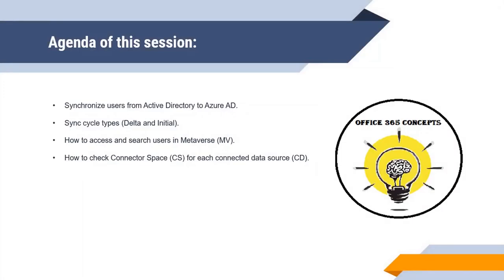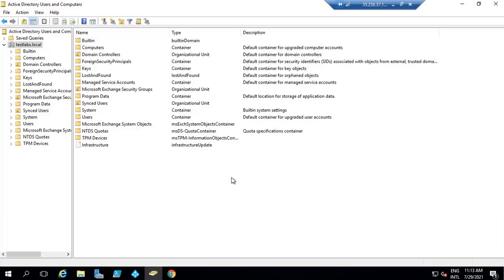In this particular video, I will be showing you how to synchronize objects from Active Directory to Office 365. I will show you practically how to create users and how to run sync cycles. I will discuss the types of sync cycles, how to check connector space, and how to search objects within Metaverse. So first, let me show you how to synchronize a user object from on-premise Active Directory to Azure Active Directory.